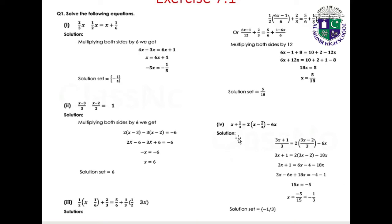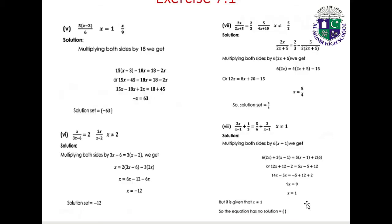Part 4: (x plus 1)/3 equals 2(x minus 2)/3 minus 6x. Multiplying through gives 3x plus 1 equals 2(3x minus 2) minus 18x, so 3x plus 1 equals 6x minus 4 minus 18x. Collecting terms: 3x minus 6x plus 18x equals minus 4 minus 1, giving 15x equals minus 5, therefore x equals minus 1/3. Solution set: {-1/3}.